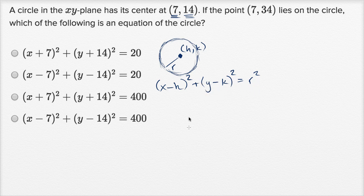Now, they tell us that the center is at 7 comma 14, so that point right over there is 7 comma 14, and then the point 7 comma 34 also lies on the circle, so it has the same x-coordinate. Its y-coordinate is just higher, so this might be that right over there might be the point 7 comma 34. It would be right above it. We've just increased our y without changing our x.